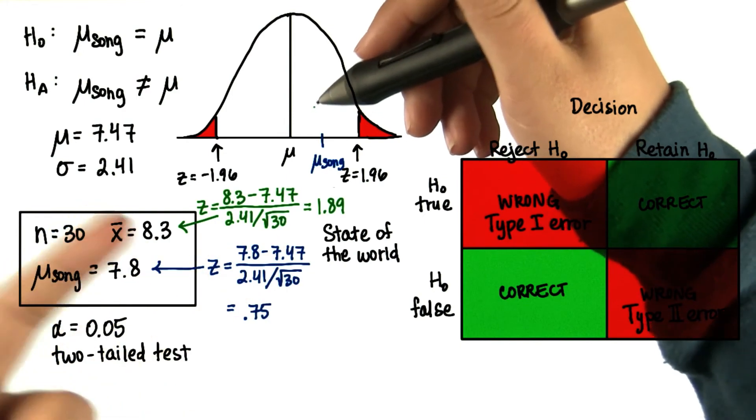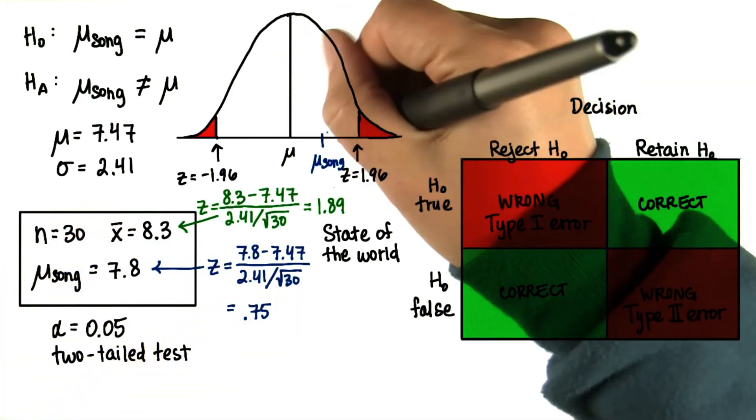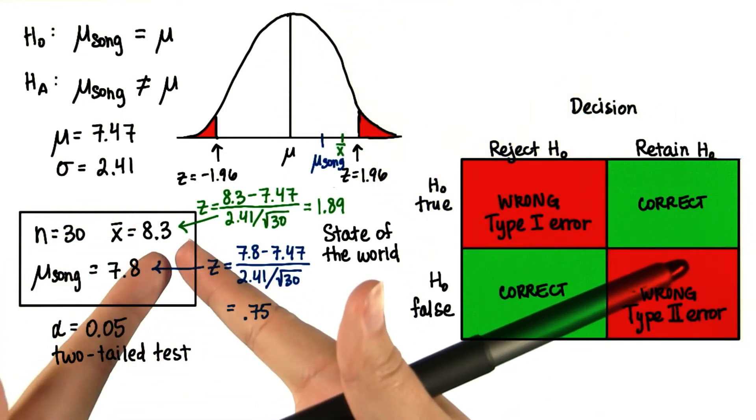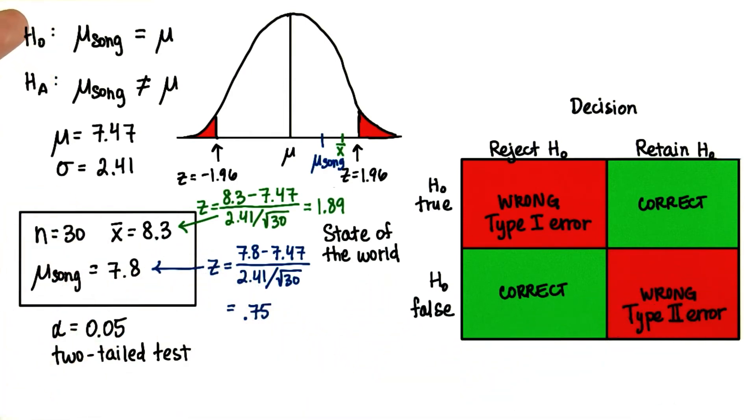Therefore, our sample statistic also falls outside the critical region. Based on the results of this sample, we would fail to reject the null.